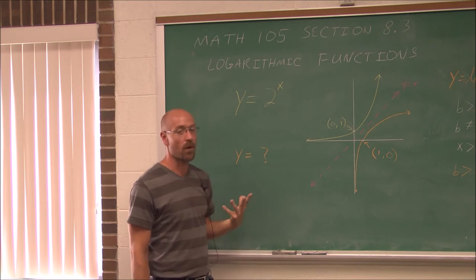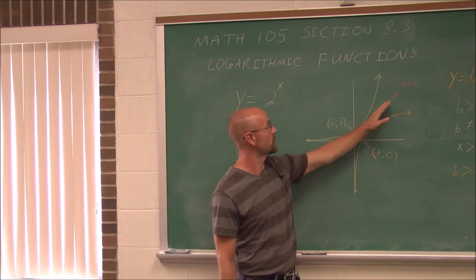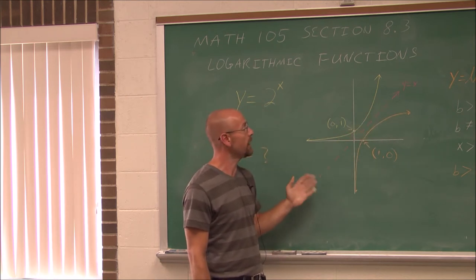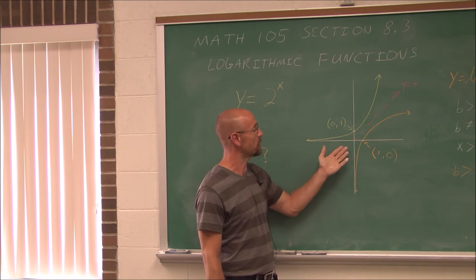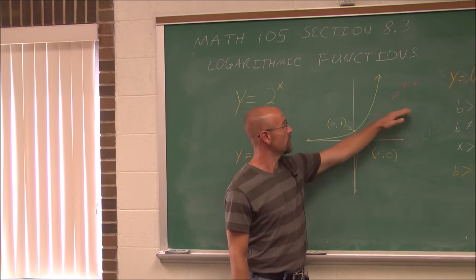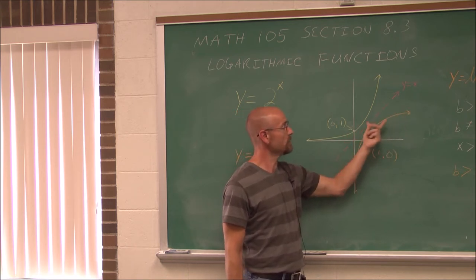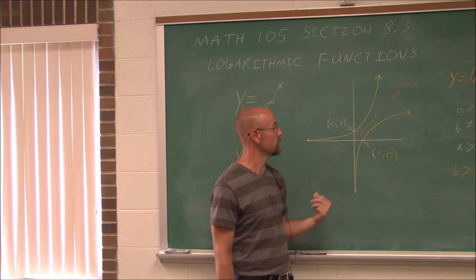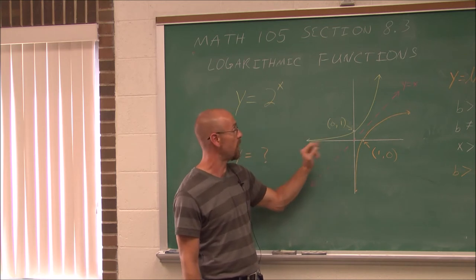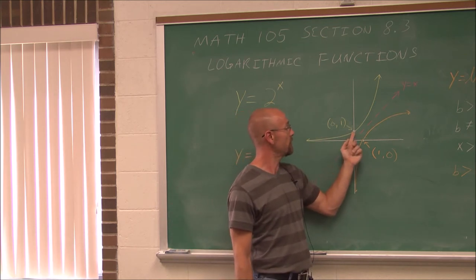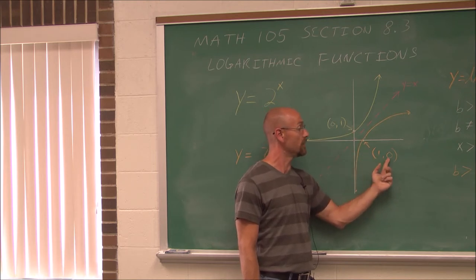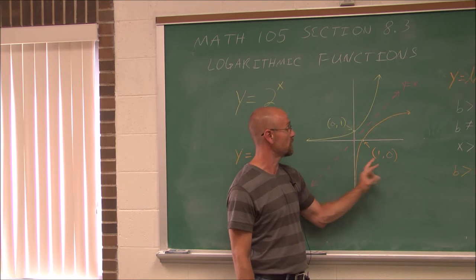What would happen if I wanted to find its inverse? In this graph, I plotted y equals x, which is the identity function. Any inverse has a graph that is a reflection through y equals x. We see this orange graph here — this is a logarithmic function, and it is the inverse. We know inverses exchange y with x, so instead of having a y-intercept of (0, 1), we have an x-intercept of (1, 0).